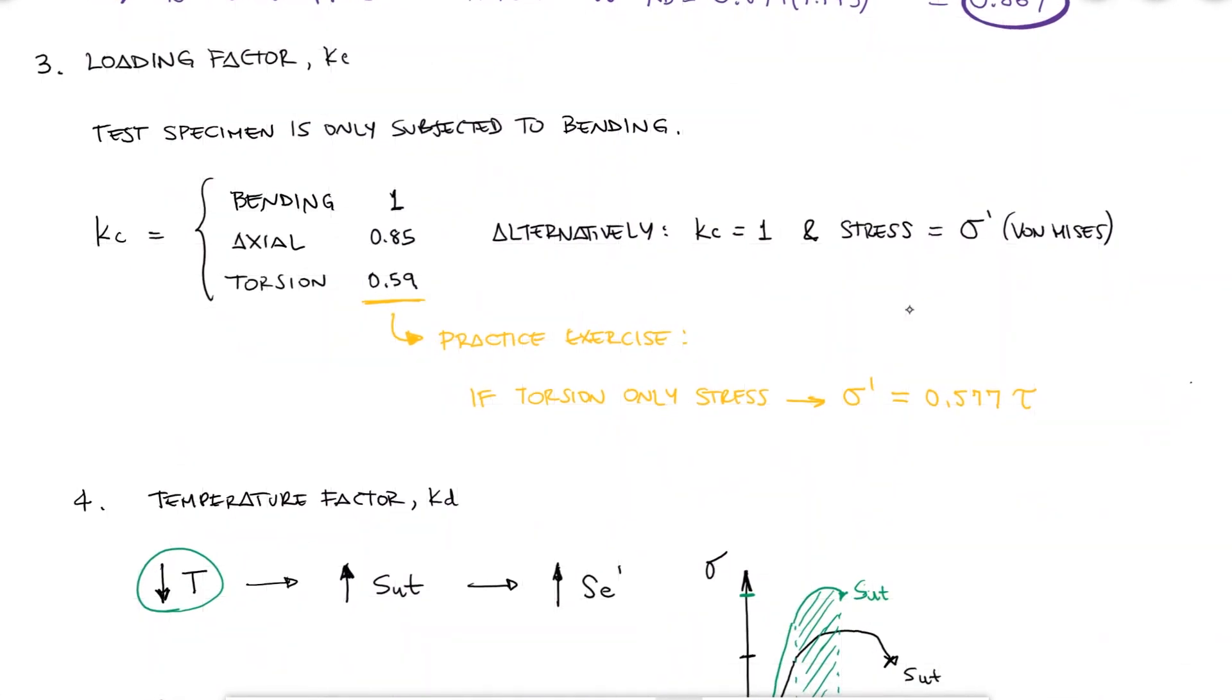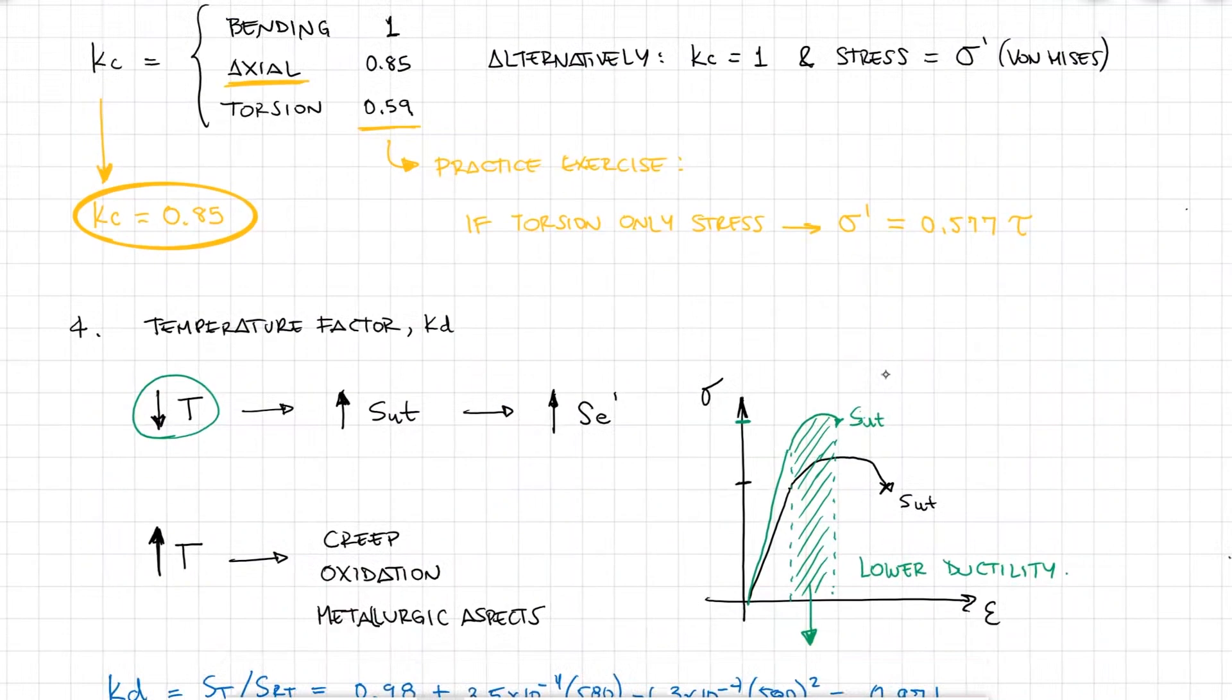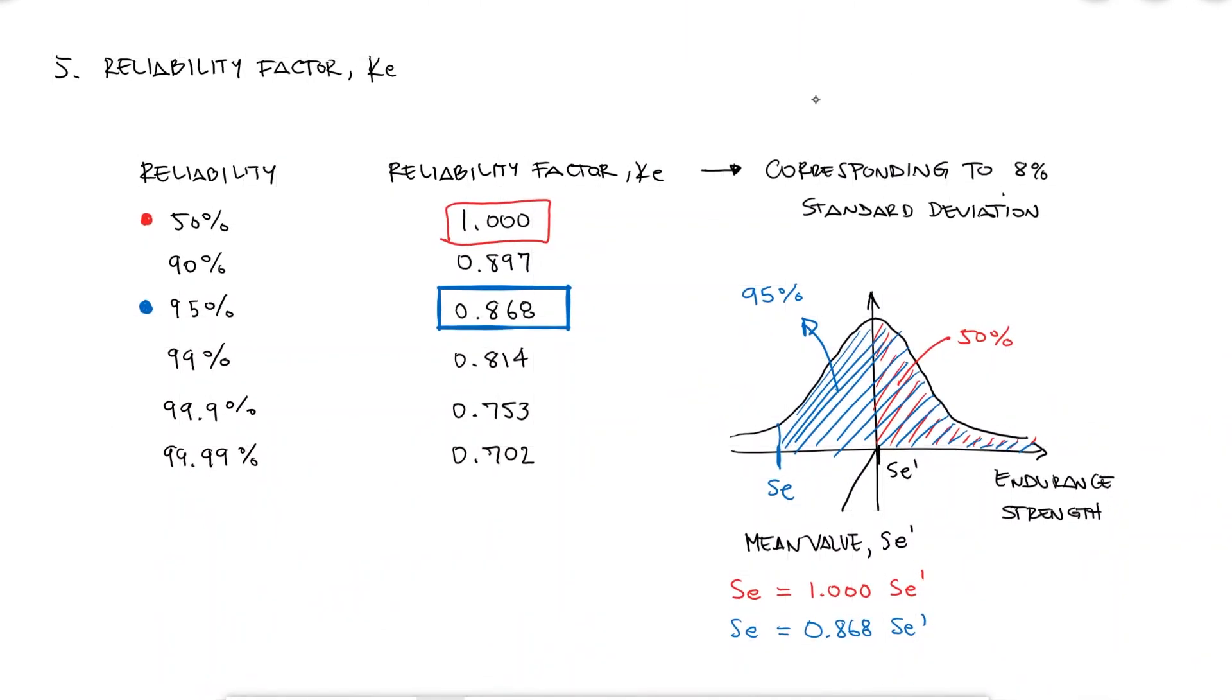Since the steel bar is subjected to axial loading, we will use a loading factor KC of 0.85. And finally, if I want to have a reliability of 99%, meaning that with a 99% confidence, this sample will have the endurance limit that I'm calculating, we find a KE value of 0.814.